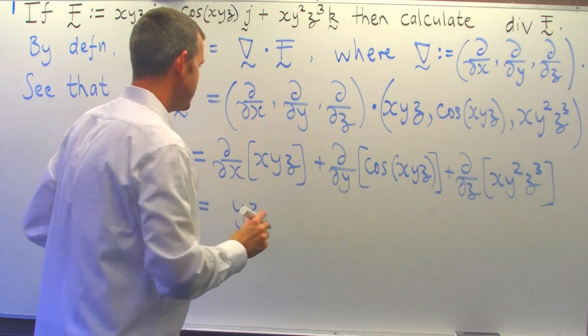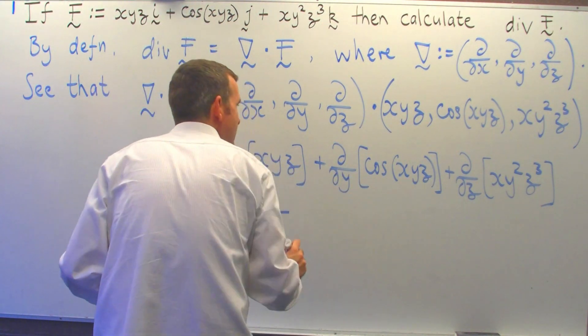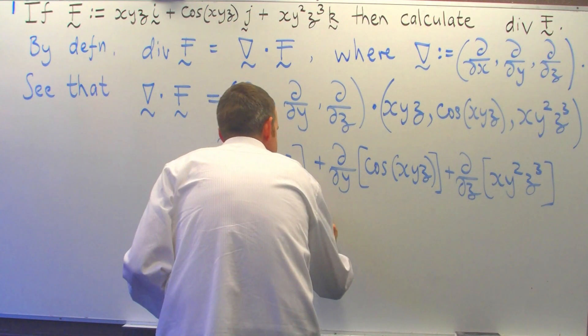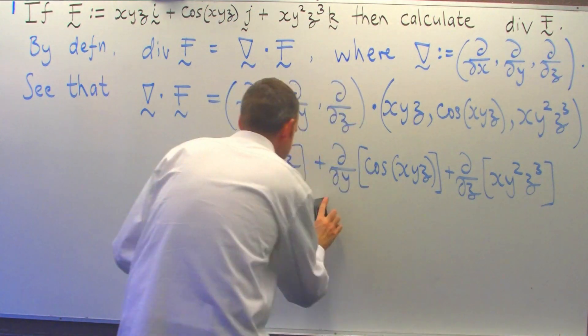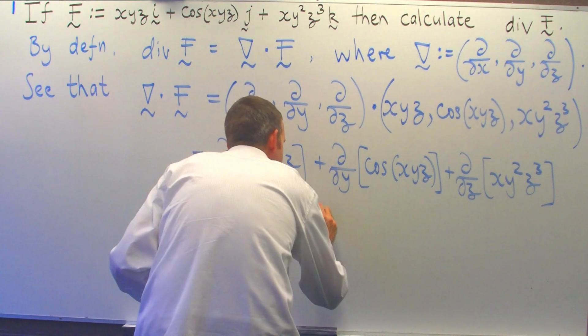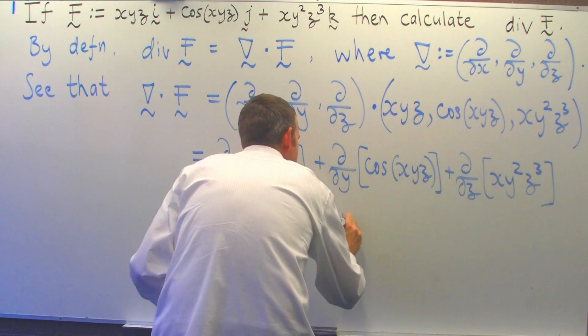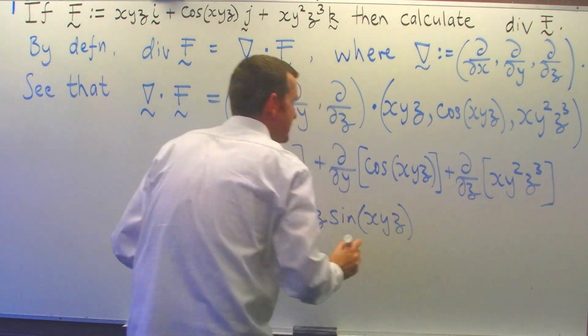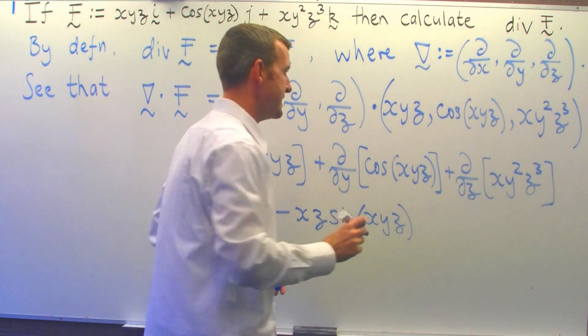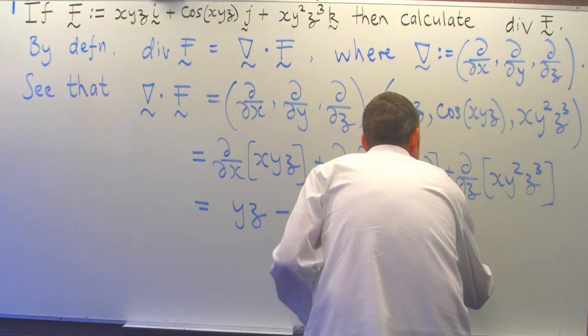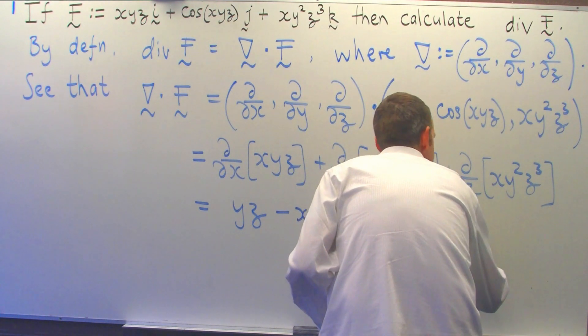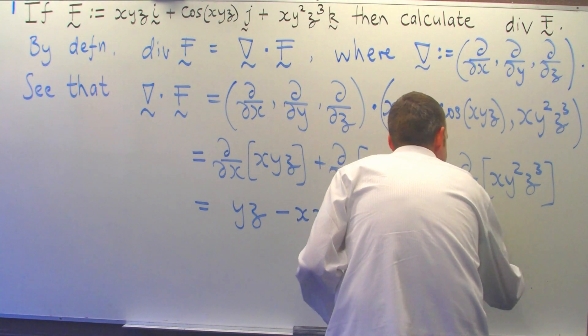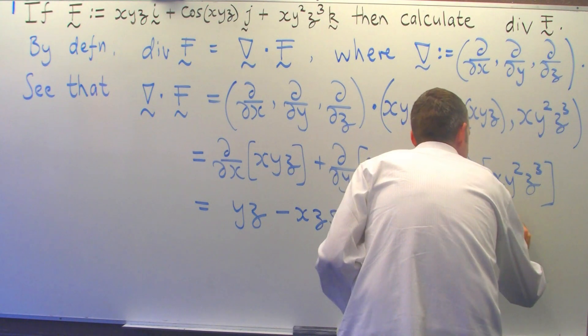In this one, we'll get minus xz sine of xyz. And in the final one, we'll get 3xy²z².